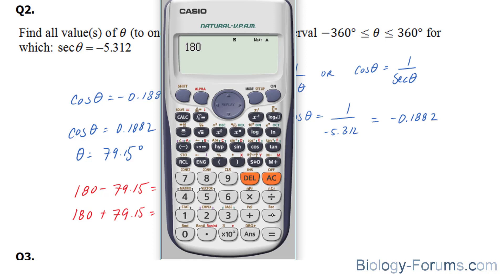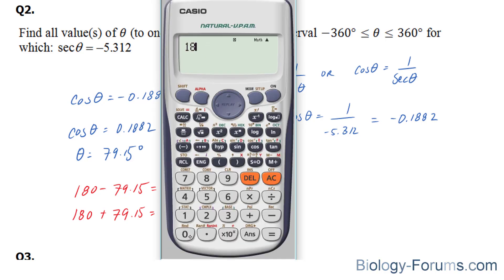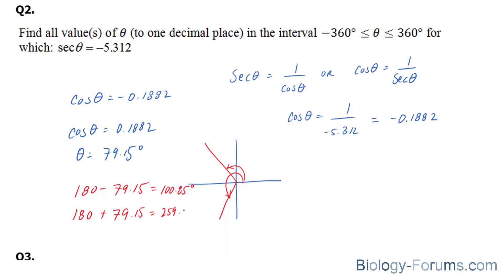180 minus 79.15 is 100.85 degrees, and 180 plus 79.15 is 259.15 degrees. So we just found two positive angles between 0 and 360. But remember, the question asks us for the negative, from negative 360 to 360.